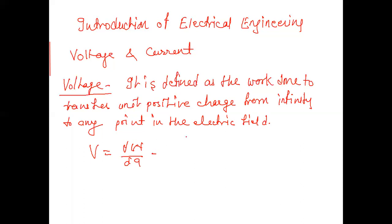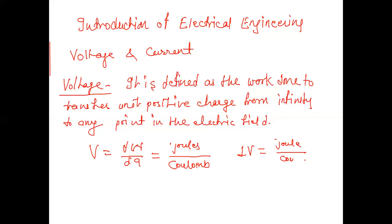The unit of work done is Joules and the unit of charge is Coulombs. So one Volt is equal to one Joule per Coulomb. This is another definition of voltage. The actual unit of voltage is Volt.